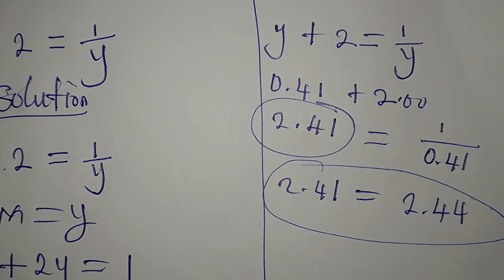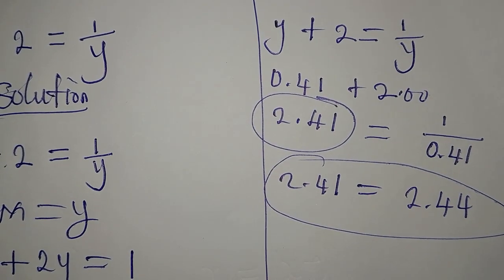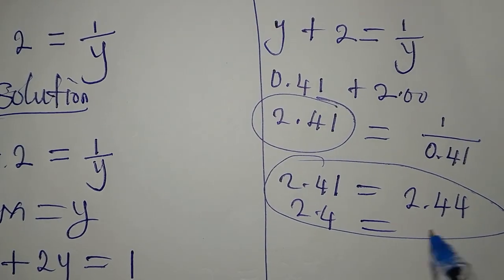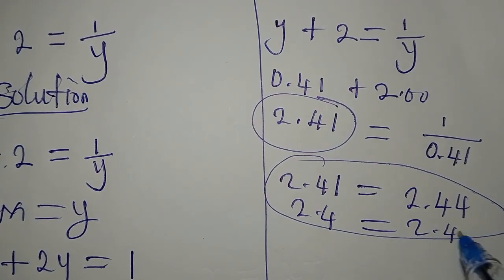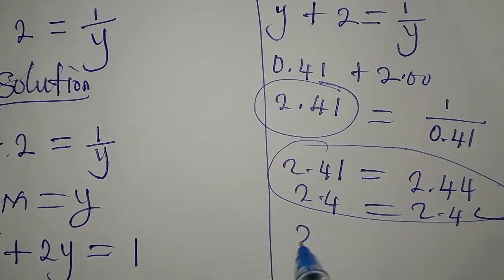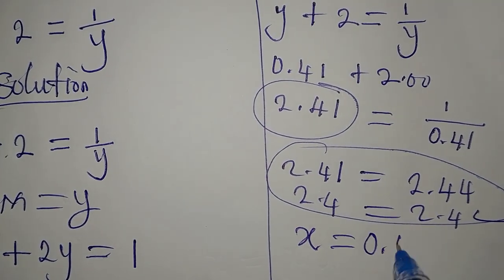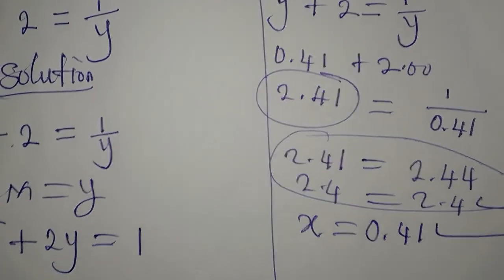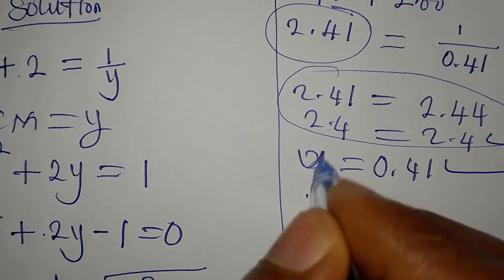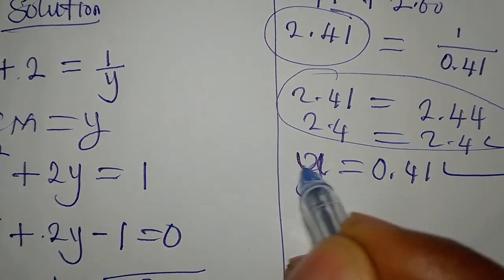So 1 divided by 0.41 is approximately 2.44. We can approximate both of them. If we want to do this to one decimal point, it's going to be 2.4, and on the other hand we have 2.4, so they are the same. So y equal to 0.41 satisfies. Now let's get the second value of y.